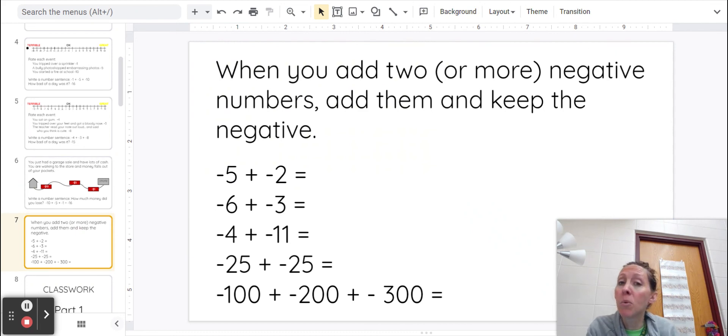Alright, so the shortcut is when you add two or more negative numbers, add them and keep the negative.